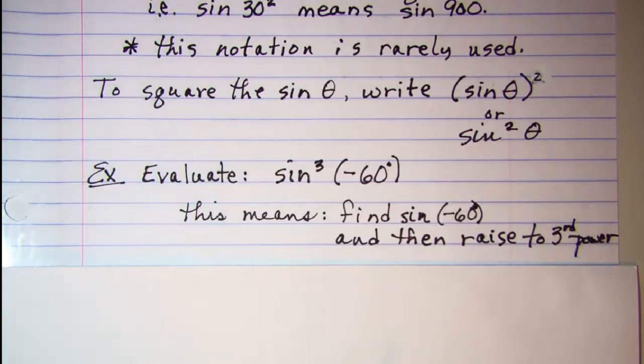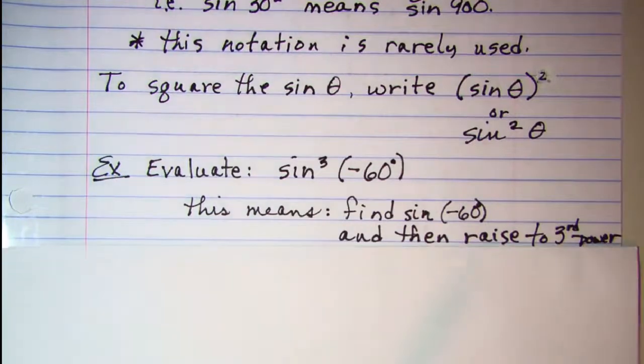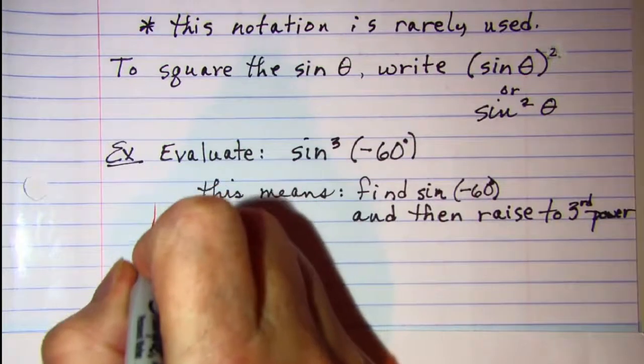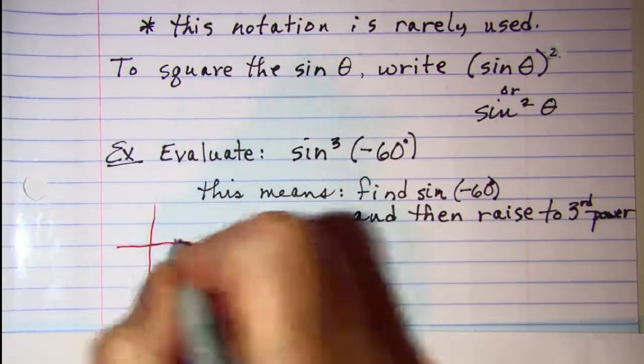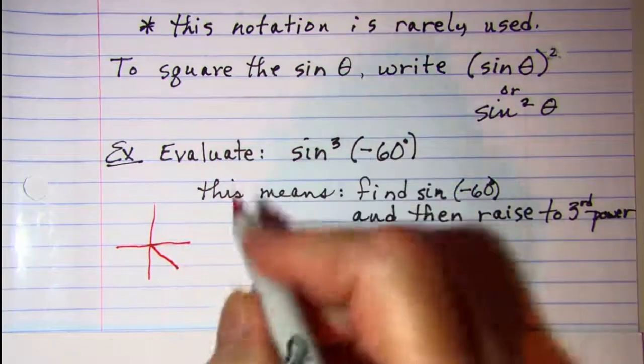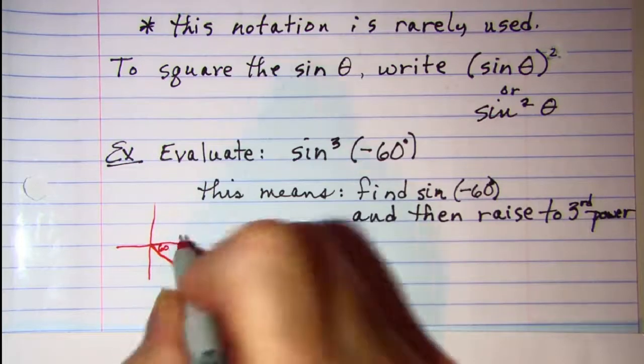We're asked to evaluate sin³(-60°). This means that we need to find the sine of negative 60 and then raise that to the third power. Now negative 60, we need to rotate that clockwise and 60 is our reference angle.